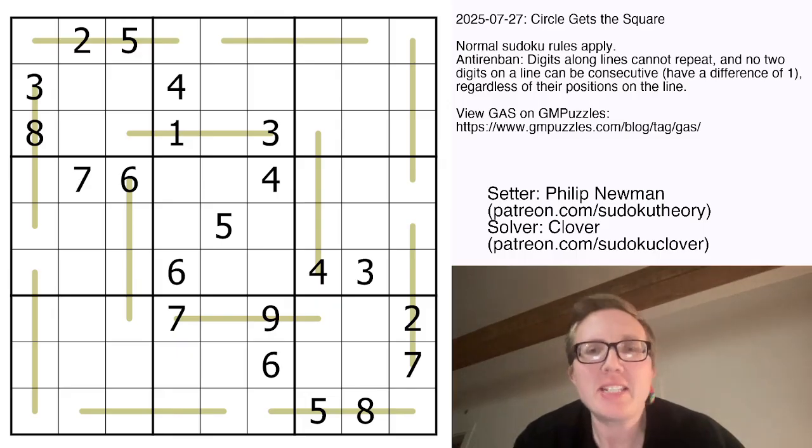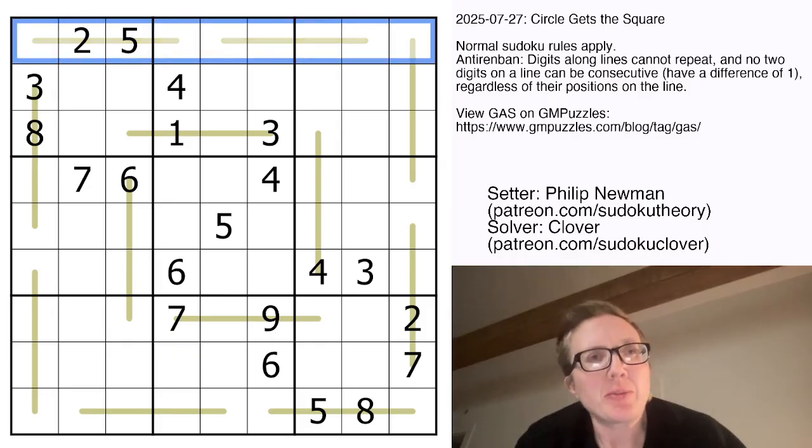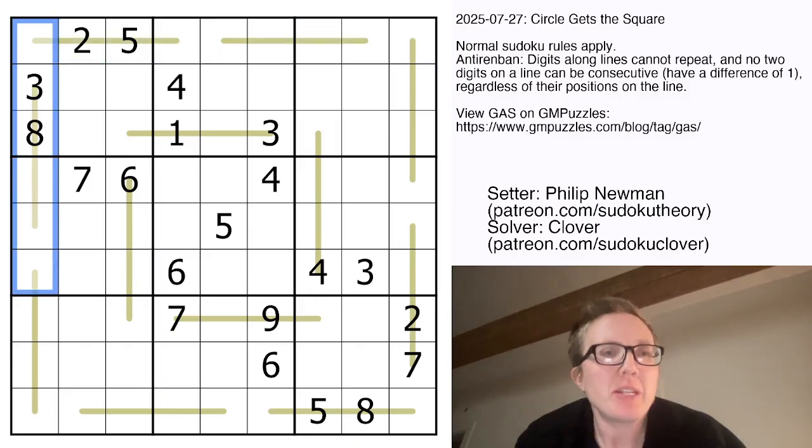This is an anti-Renbon Sudoku. That means we have normal Sudoku rules, so we're placing the digits 1 through 9 once each in each row, each column, and each outlined 3x3 region.